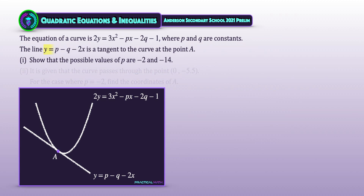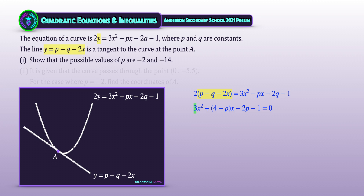We begin the solution by substituting the tangent equation into the curve equation. Simplifying and rearranging gives the quadratic equation 3x² + (4 − p)x − (2p − 1) = 0. Unlike the previous question, the coefficient of x² is constant 3, which is greater than 0, so the curve is a minimum curve. We only need to examine the discriminant of this quadratic equation. Since the line meets the curve at only one point, there are two real and equal roots.